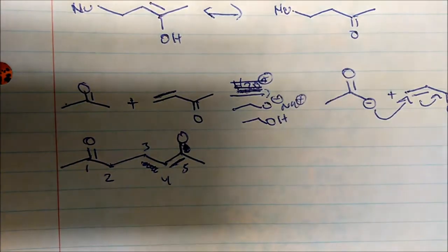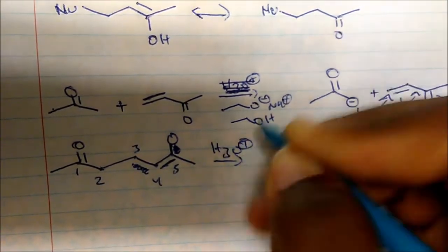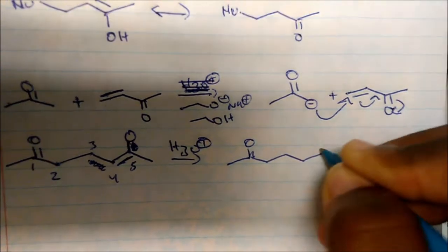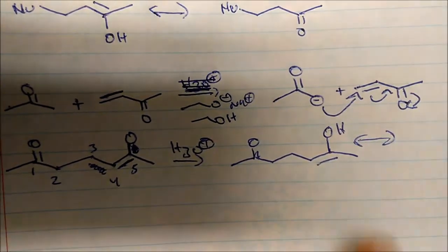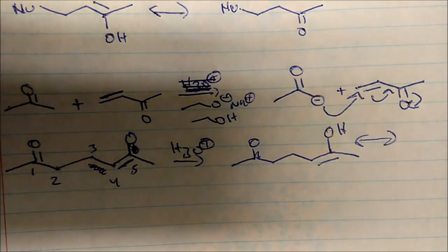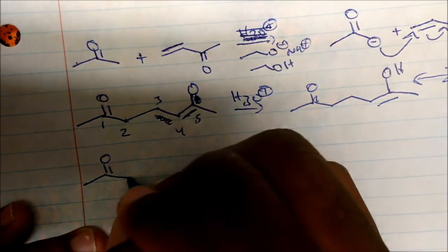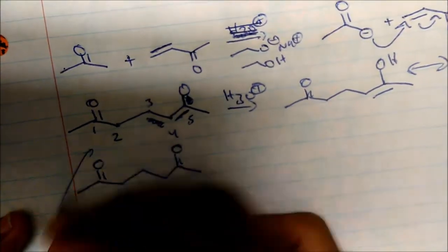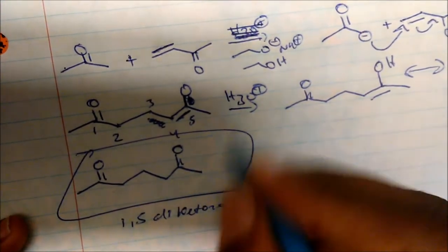We get a structure where the double bond is here — counting one, two, three, four, five — notice we have 1,5-addition. We work this up in acid, we get the alcohol, which tautomerizes over the double bond, and since we have a double bond adjacent to an alcohol, we get the ketone. That gives us our final product.